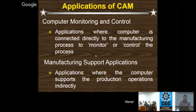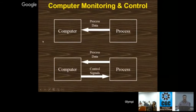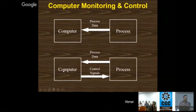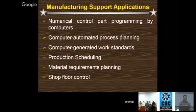Applications of CAM include computer monitoring control and manufacturing support applications. Computer monitoring control is unidirectional — the process sends data to the computer. Computer process control is bidirectional — the computer sends control signals to the process and the process sends data back to the computer. Manufacturing support applications include: numerical control programming, computer automated process planning, computer generated work standards, production scheduling, and shop floor control.